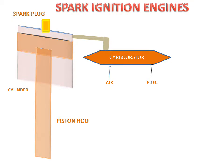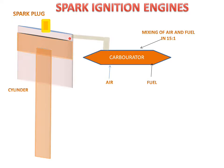The proper mixture of air and fuel in the carburetor is 15:1, which is also called the stoichiometric ratio or stoichiometric mixture. This mixed amount of air and fuel will reach the cylinder.